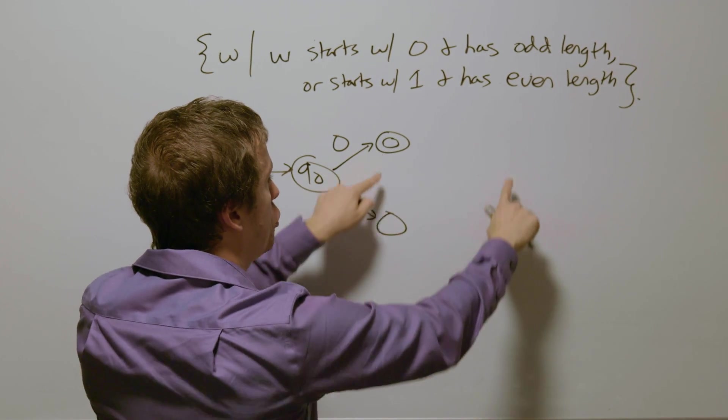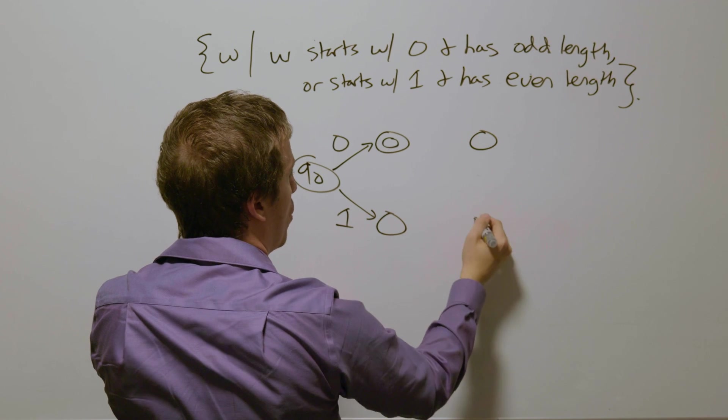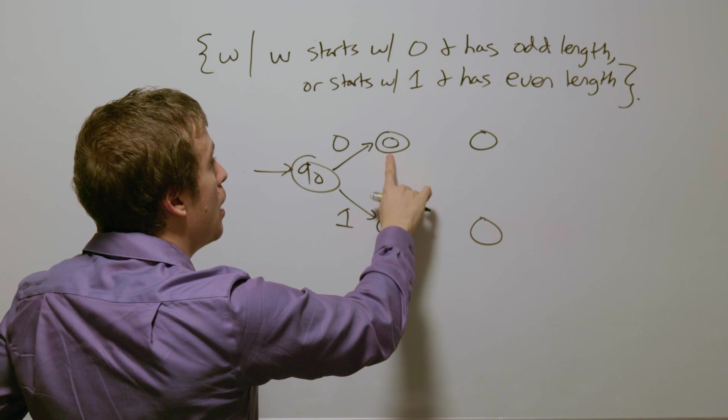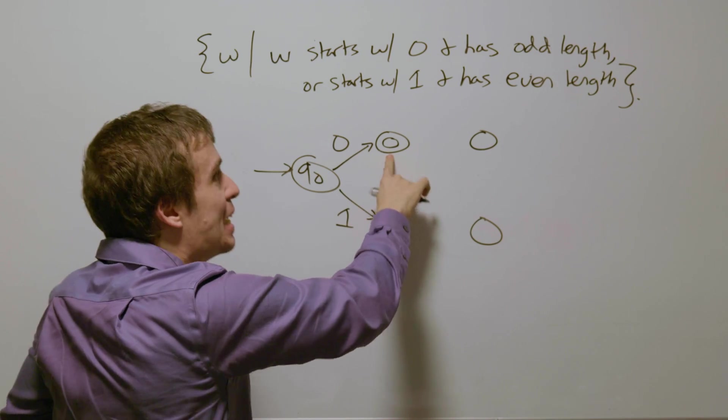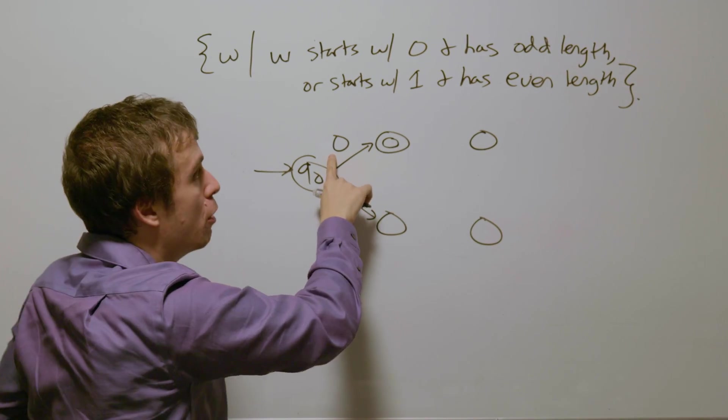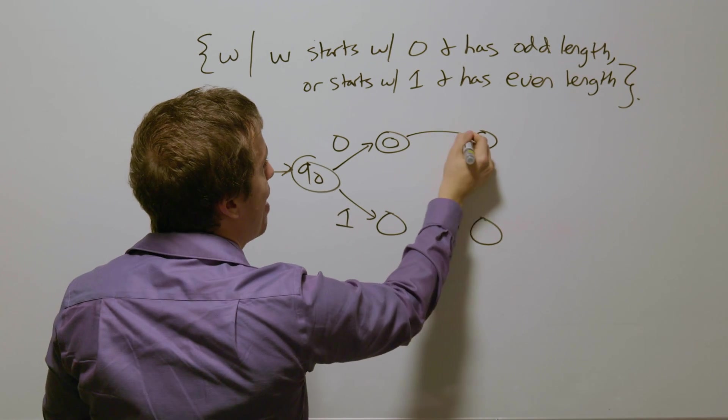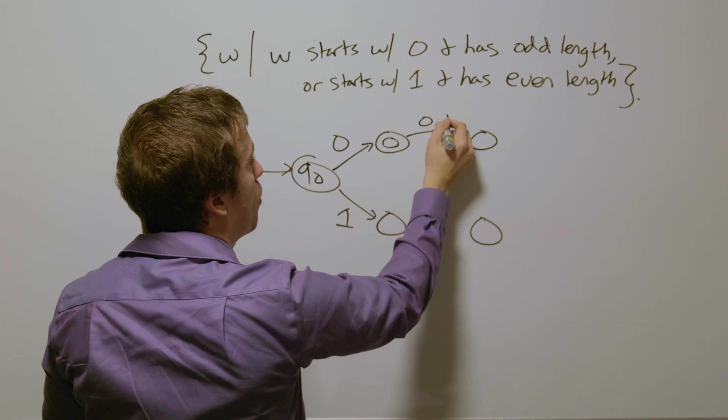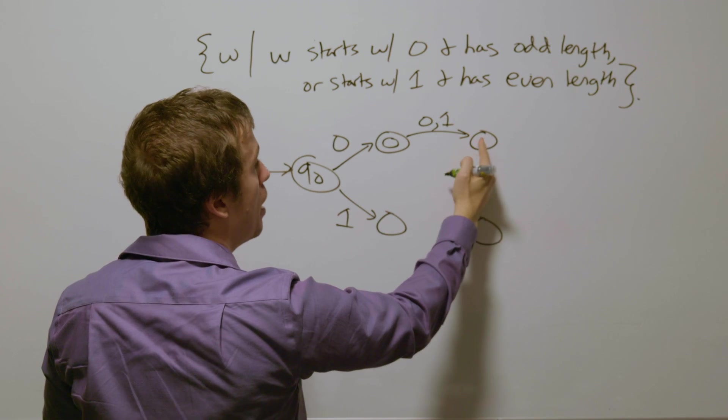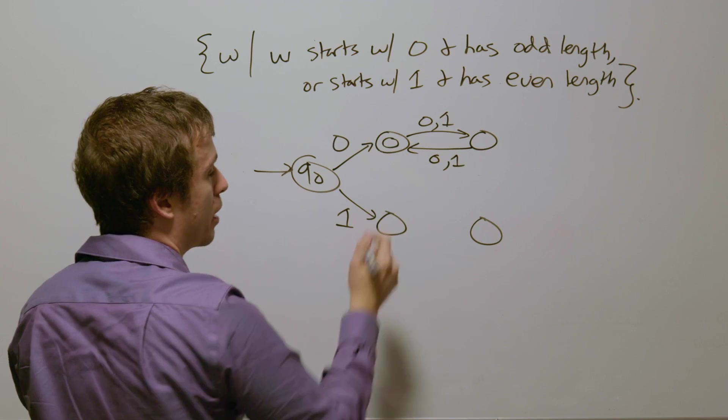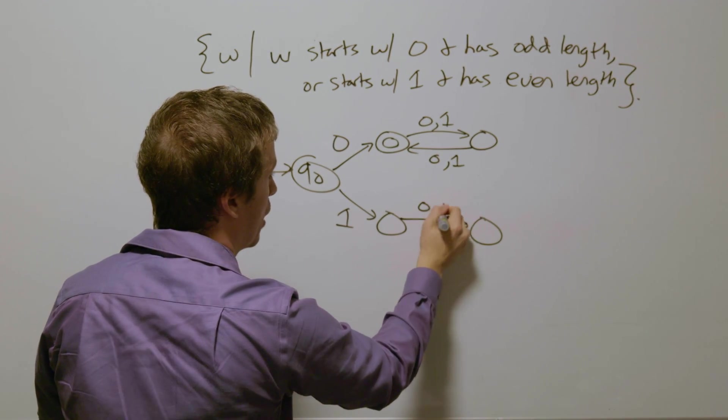Either case is always going to correspond to even or odd length. So each case is going to have two states up here. And this one's going to correspond to, we have read an even number of things after the initial 0, which means that we have read an odd number in total. But that means we need to read a 0 and 1 to go over to the other parity case, and a 0 and 1 to go back to the other case, and vice versa down here.